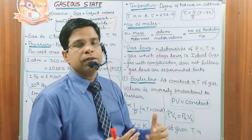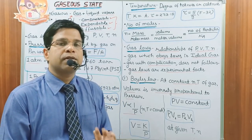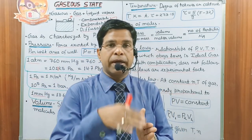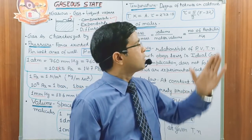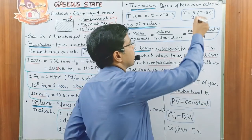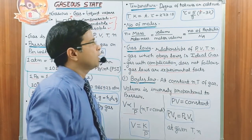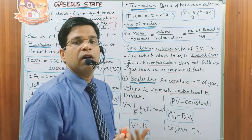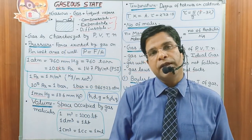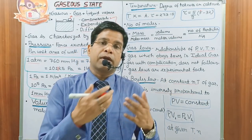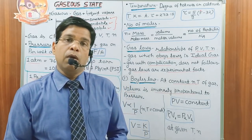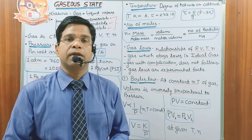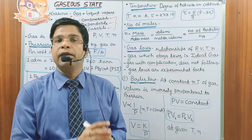The Fahrenheit unit is rare but some questions use it. Temperature in degree Celsius is equal to (5/9) × (temperature in degree Fahrenheit − 32). Next, the number of moles: it is given by mass divided by molar mass, or given volume divided by molar volume, or given number of particles divided by Avogadro's number. These are the formulas to calculate the number of moles.